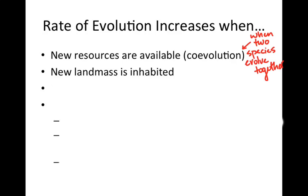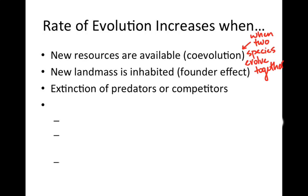When there is a new landmass to be inhabited, that's often related to the founder effect. You could also have a mass extinction event that gets rid of major predators or competitors — like mammals after the dinosaurs. There was a huge amount of adaptive radiation that took place then because there were so many new niches available, new roles to play without the dinosaurs present.